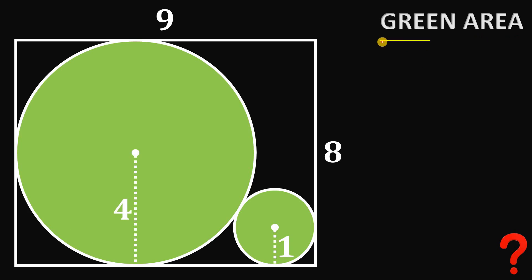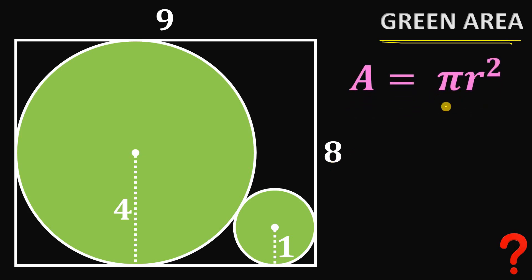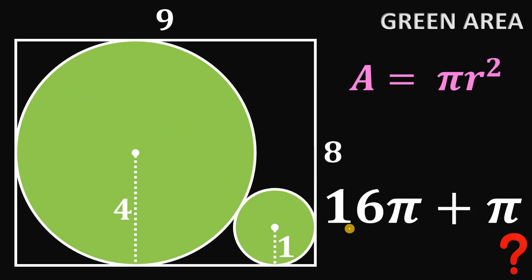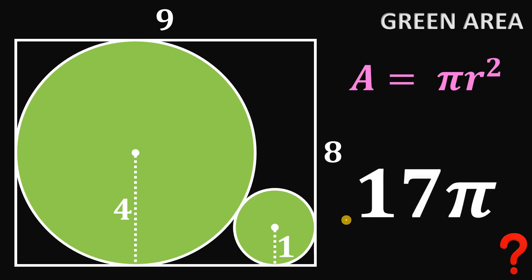Now we can find the green area — the sum of the areas of the two circles. The area of a circle is πR². For the big circle with radius 4: area = π × 4² = 16π. For the small circle with radius 1: area = π × 1² = π. The total green area is 16π + π = 17π square units. Therefore, the total green area equals 17π square units.